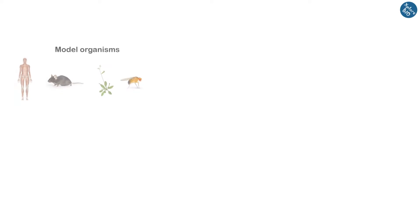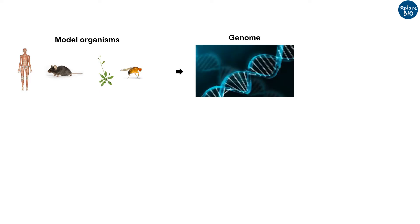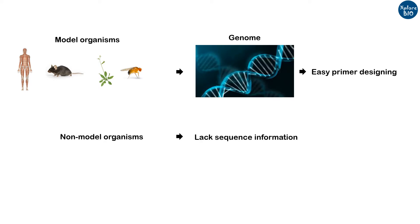A very good morning and welcome to ExploreBio. If you are working on a model organism such as human, mice, Arabidopsis, or Drosophila, you have access to their genomic information for primer designing. But if you are working on a species with limited or no sequence information and you want to amplify or clone a gene, what will you do?